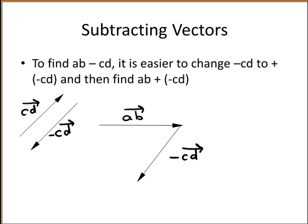Your resultant vector is the vector that goes from the start of the first to the end of the second, which is here. So this is the resultant AB minus CD.